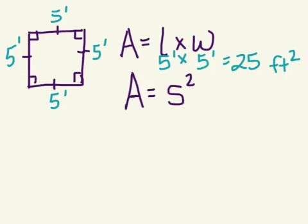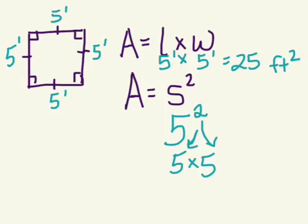If we plugged it into this formula here, area equals a side length squared. Well, basically that means five. The s already kind of looks like a five. Coincidence. Five squared. That means five times five. That two means how many times do we see the five? And we'll still get 25 square feet.